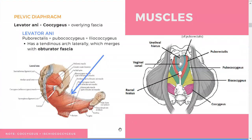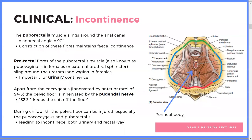In terms of muscles, we've got a bunch. Pubococcygeus, coccygeus, and iliococcygeus are some of the important ones, but the levator ani — which is made of pubococcygeus, puborectalis, and iliococcygeus — is very important. It has a tendinous arch and merges with the obturator fascia. This is something they really like to assess you on, because it's important in the context of incontinence.